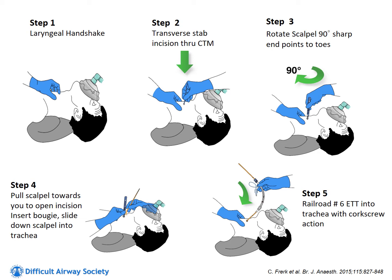One very important thing to note when looking at these five pictures: there is a mask on the patient, because someone is at the head of the bed trying to oxygenate the patient the entire time this preparation and procedure is going on. It's really important to remember that at all phases, including Plan D, we are still trying to oxygenate our patient throughout this difficult situation.